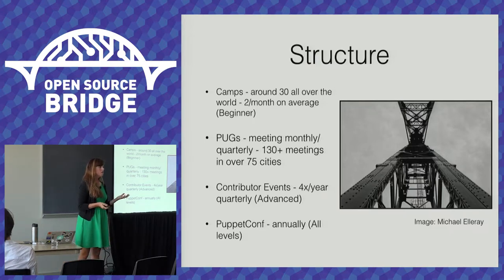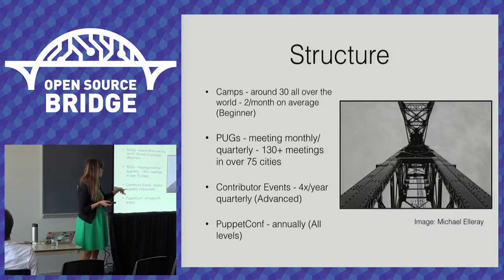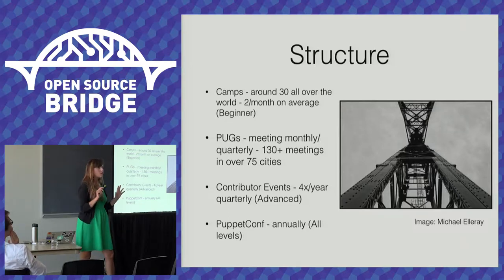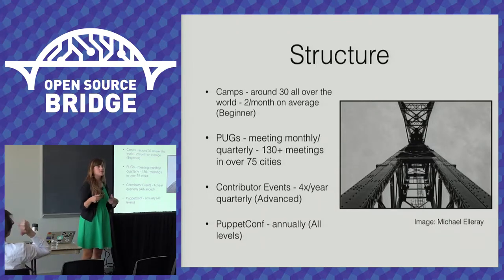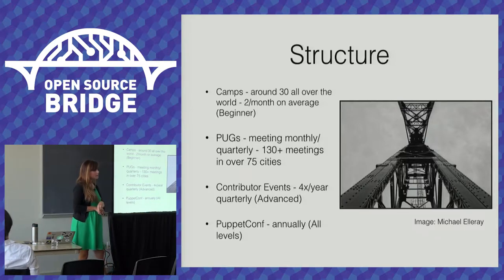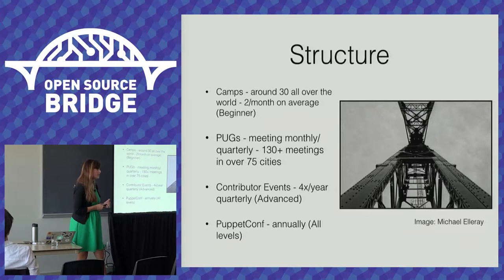Think about cadence — you want people to be able to rely on your events. For example, we have contributor events for our intermediate to advanced users. We hold one in the fall with our annual user conference, and one in the winter with FOSDEM, the annual open source conference in Ghent, Belgium. So people can rely on them — they know it happens every year with FOSDEM, every year with Puppet Camp, and they can plan year over year.